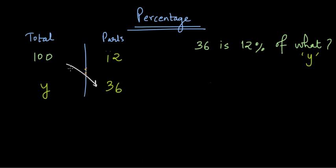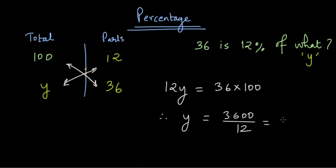Now again, all we need to do is to cross multiply and find y. Let's do that. 12 times y equals 36 times 100, dividing both sides by 12. We can isolate y on the left and we have 3600 divided by 12, which gives us 300. And so the total in this case has to be 300. And we can write the final answer as 36 is 12% of 300.